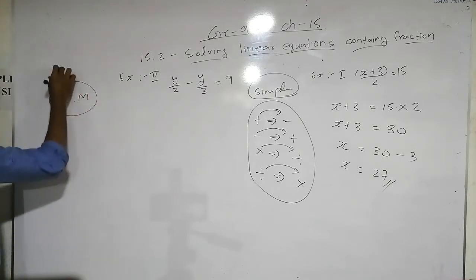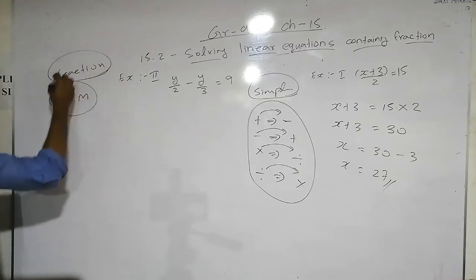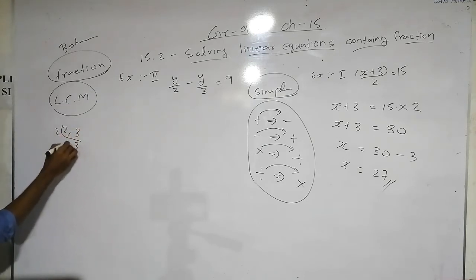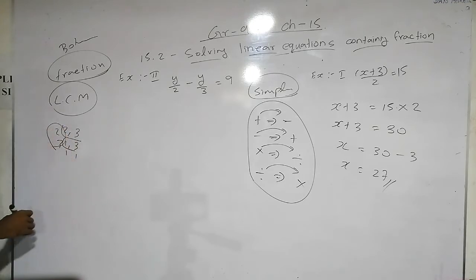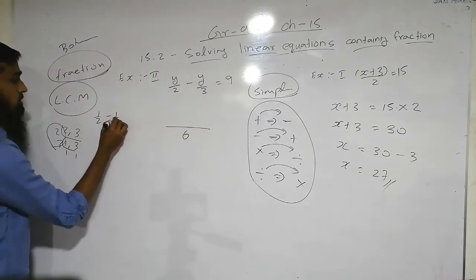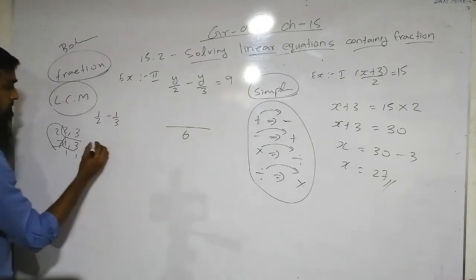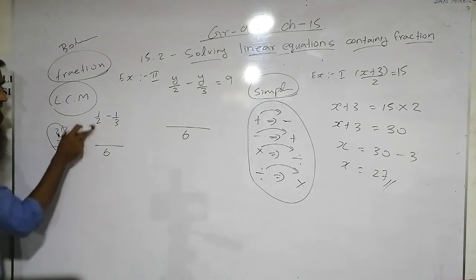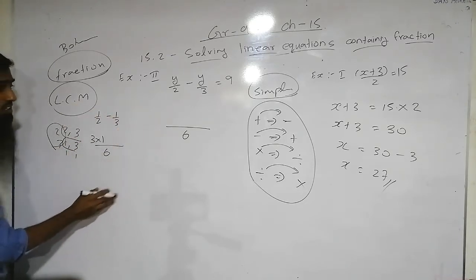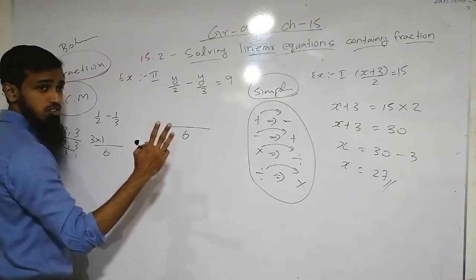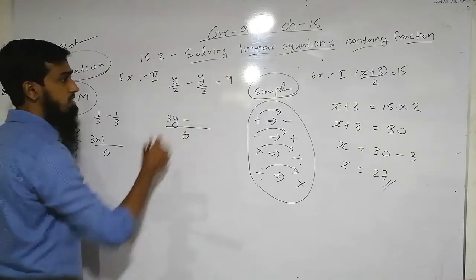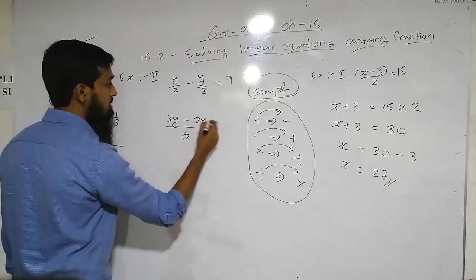We will use LCM. The LCM of 2 and 3 is 6, so 6 is the common denominator. For y/2: 6 ÷ 2 = 3, so multiply the numerator by 3 to get 3y. For y/3: 6 ÷ 3 = 2, so multiply the numerator by 2 to get 2y. So the equation becomes (3y − 2y) / 6 = 9.